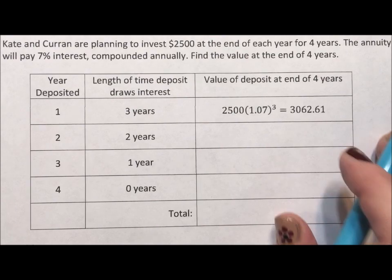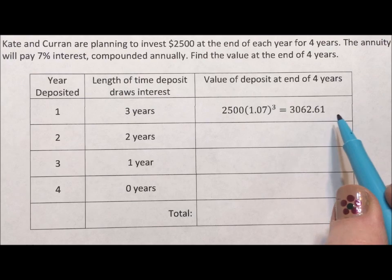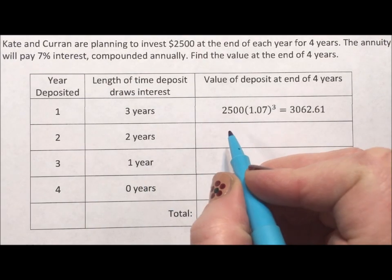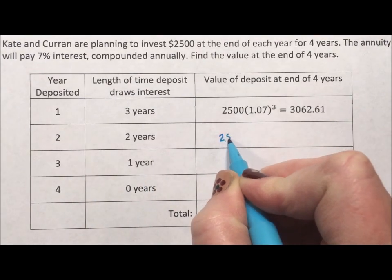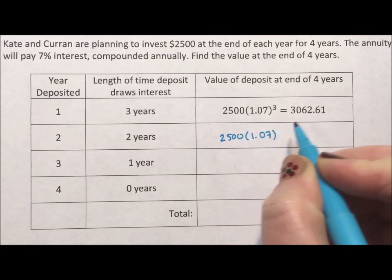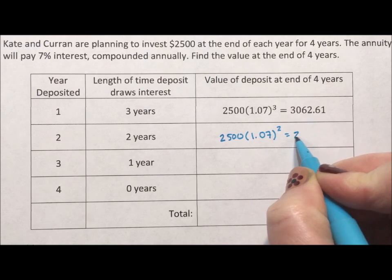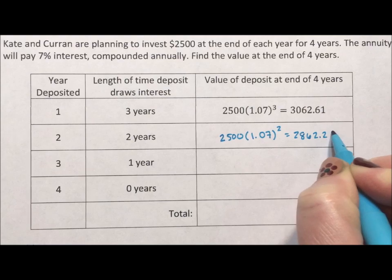Okay, so they deposit the first amount. It has three years to grow. It ends up as $3,062.61. The second year they deposit $2,500. It grows at seven percent interest. It has two years to grow. It grows to $2,862.25.